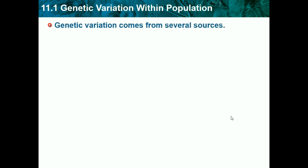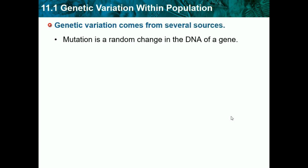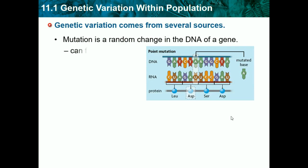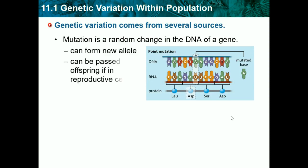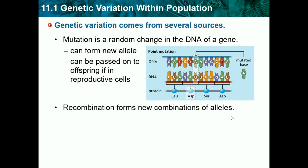Genetic variation comes from several sources. Mutation is a random change in the DNA of a gene, and that's one way we can have genetic variation. It can form new alleles and can be passed on to offspring if it occurs in reproductive cells.